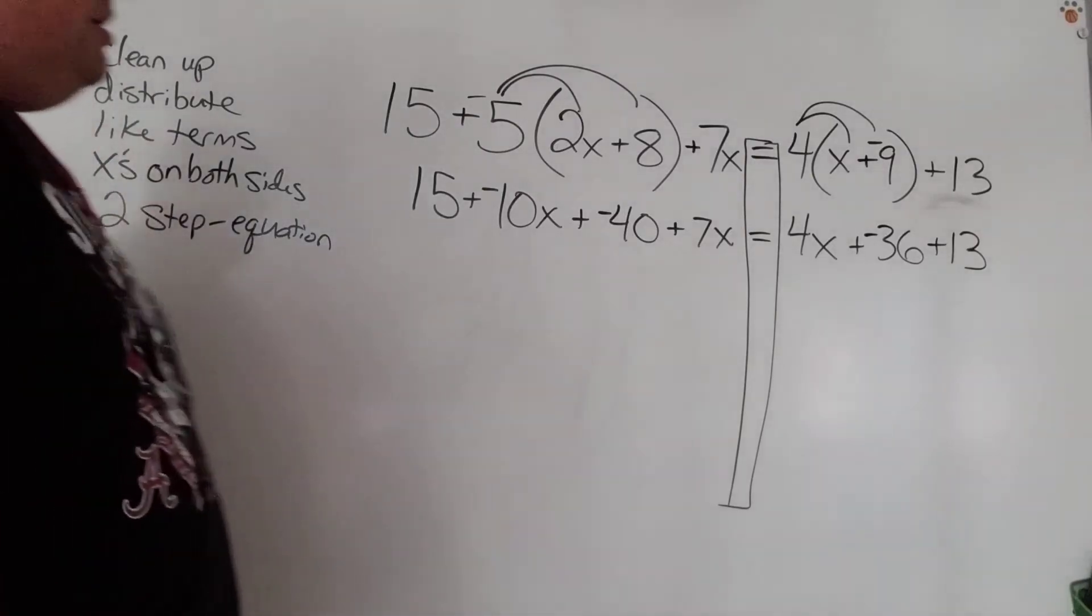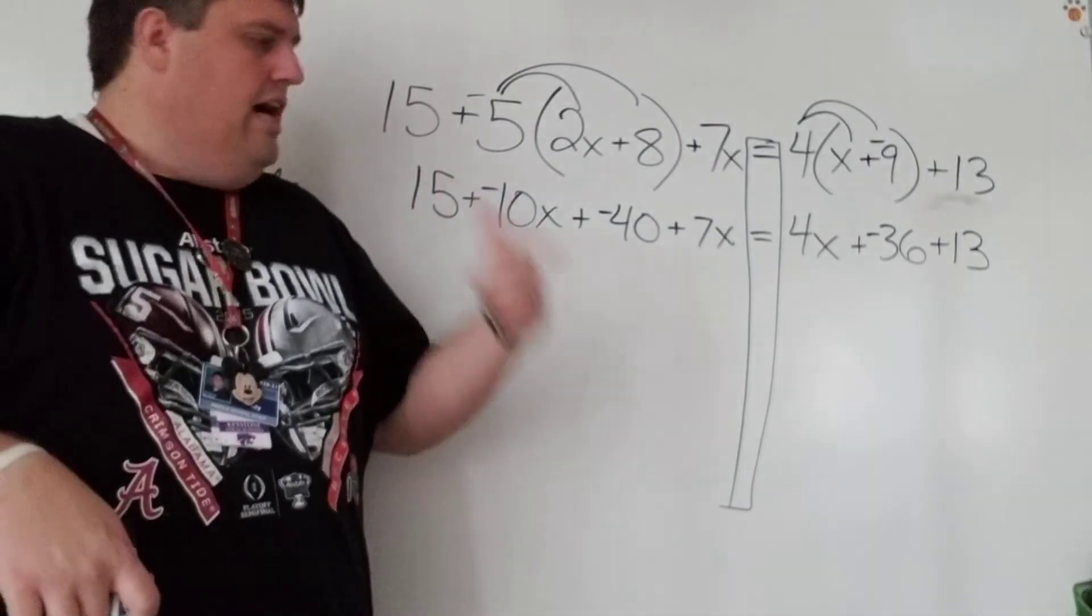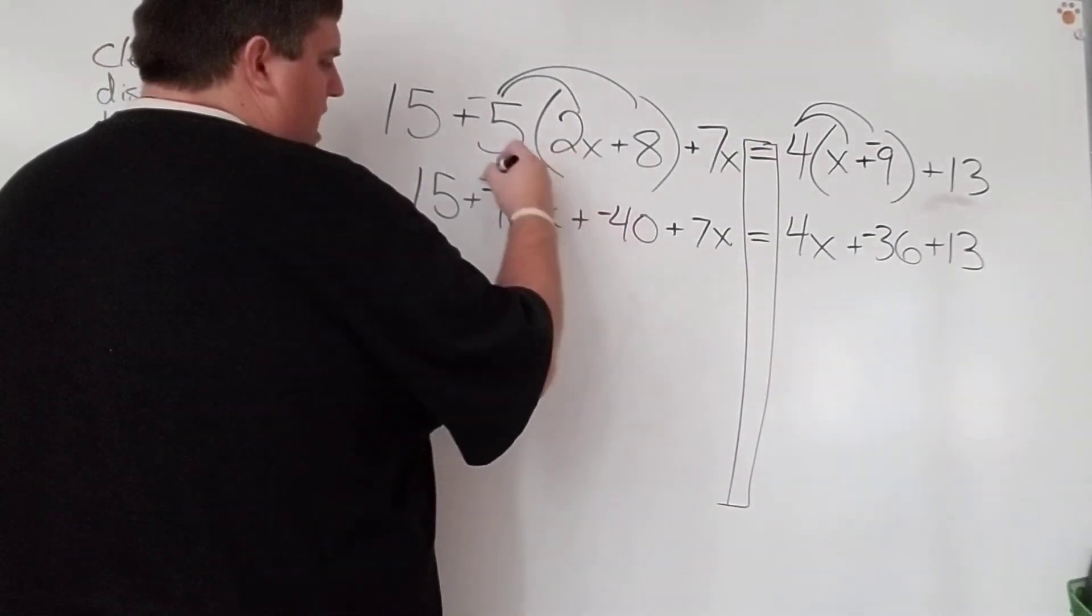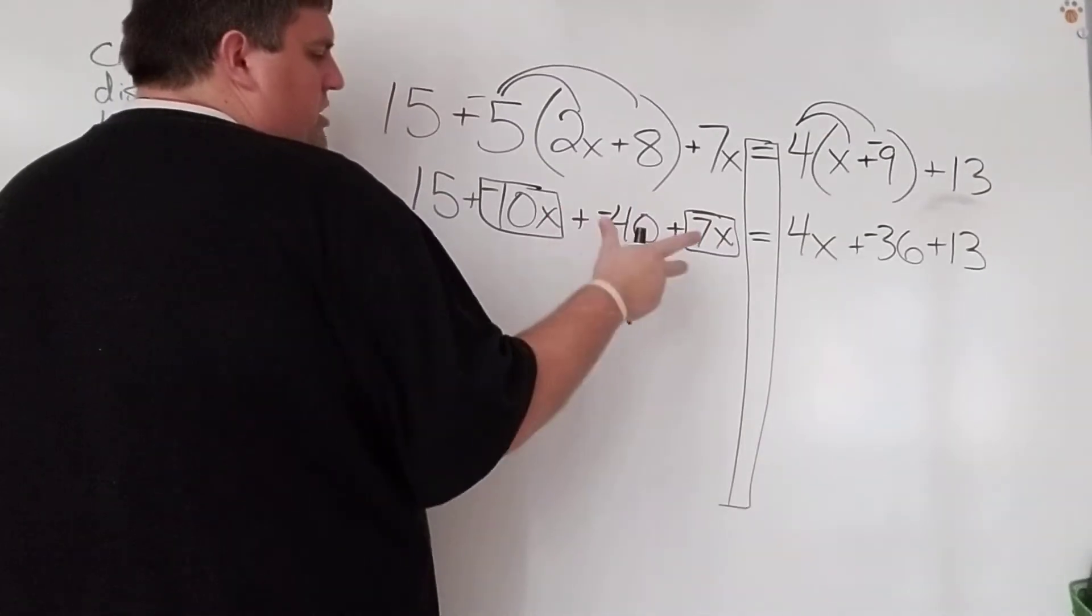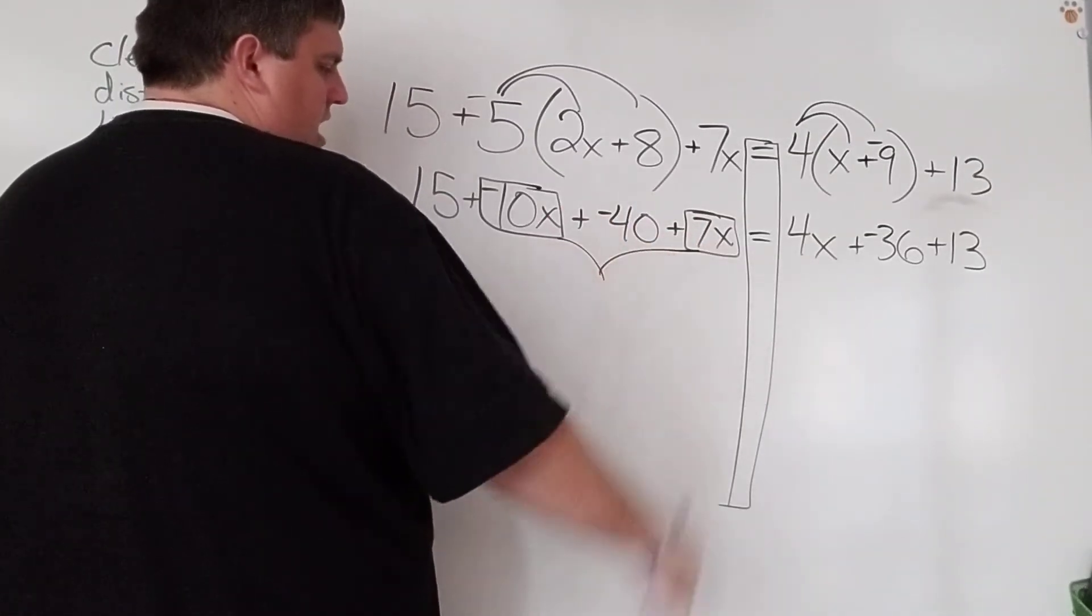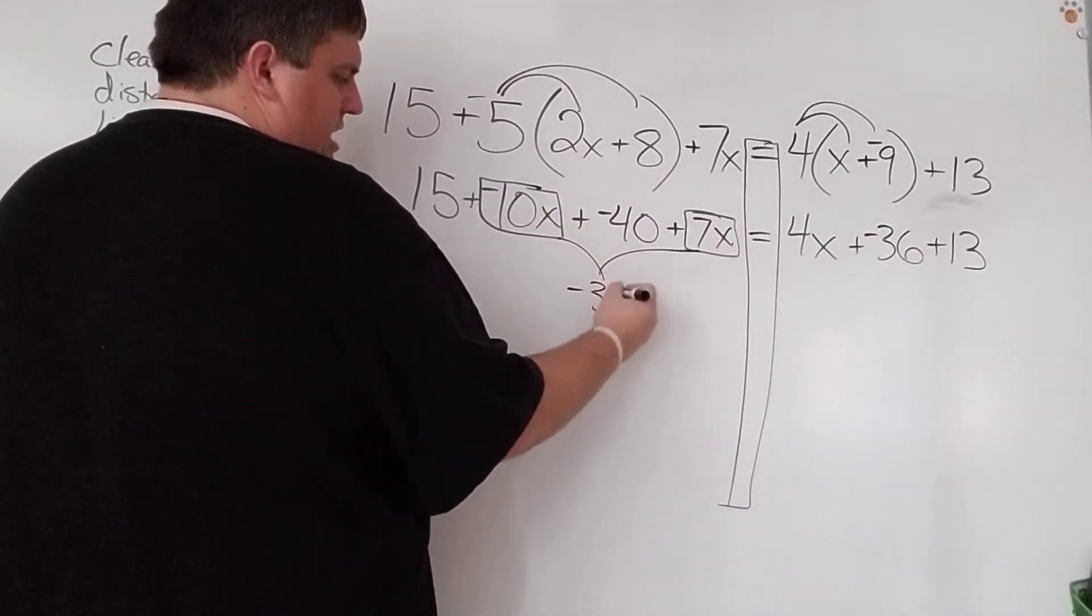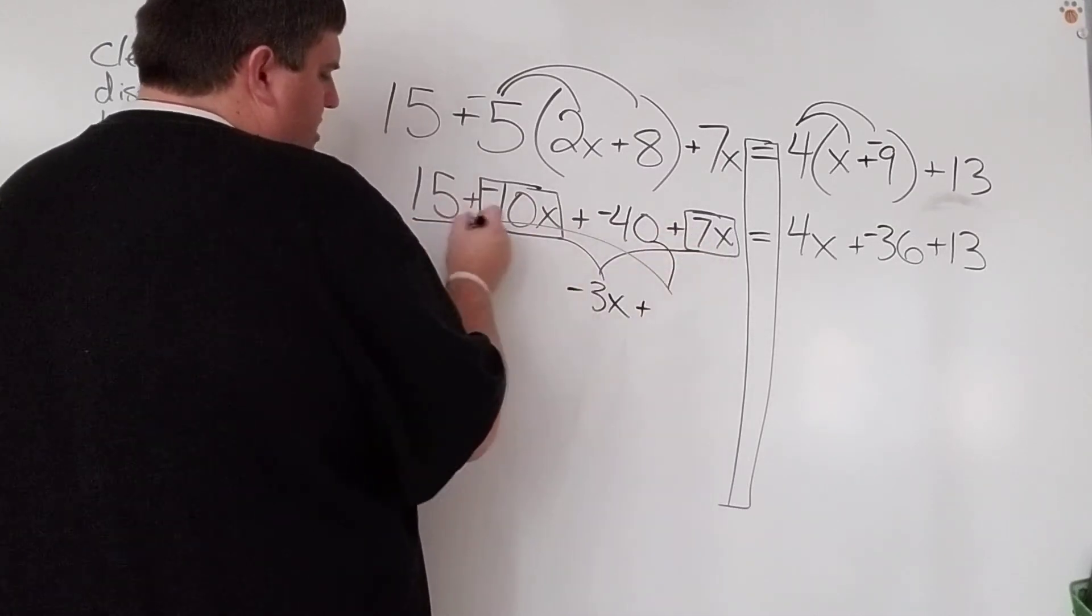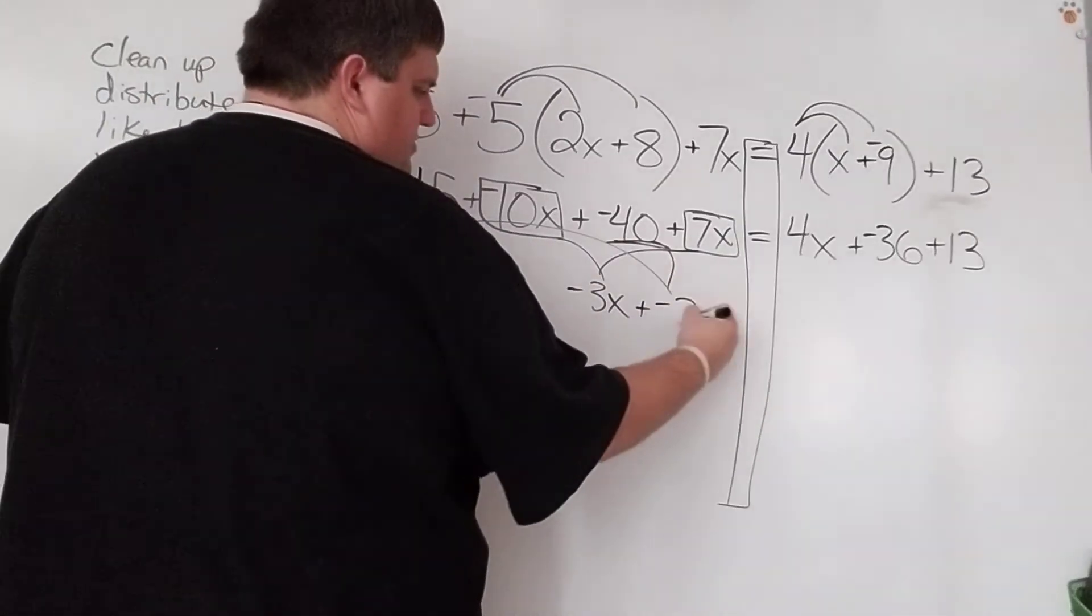Okay? So I check to see if there's anything I wanted to fix, change it up. I distribute it. Now I'm going to go over here to like terms. I definitely have some like terms. On this side, I have negative 10x and I have 7x. Remember, I can only do things on the same side. So I can add those two together. Negative 10 and 7, that would give me negative 3x's. And then I have 15 and I have 40. Those are just constants. And I can add those together and get negative 25.